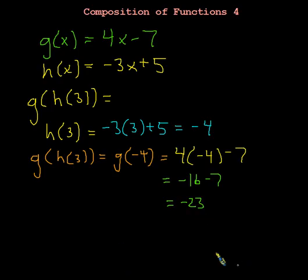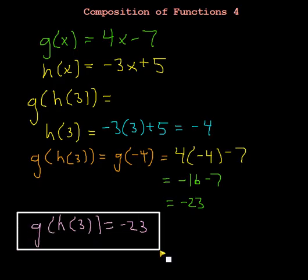So I'll summarize in the end that, again, we started off with the idea of what's g of h of 3. And we can find that by going through this process, and we end up getting that it's negative 23. That's the answer that we're looking for here. And that guy will box that answer.